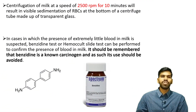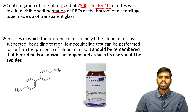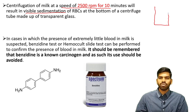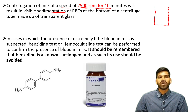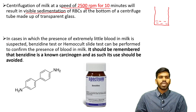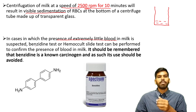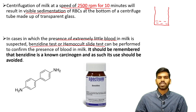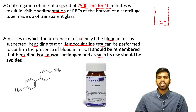Centrifugation of milk at 2500 rpm for 10 minutes will result in visible sedimentation of RBCs at the bottom of the centrifuge tube made of transparent glass. In cases where the presence of extremely little blood in milk is suspected, the benzidine test or Hemoccult slide test can be performed. However, it should be noted that benzidine is a known carcinogen and its use should be avoided. You can refer to the structural formula of benzidine on screen.